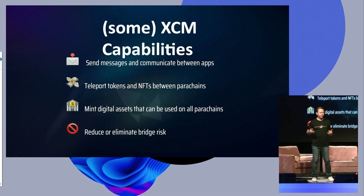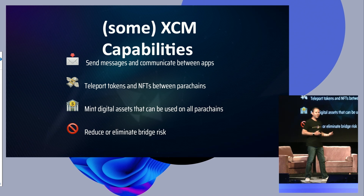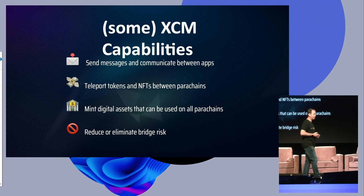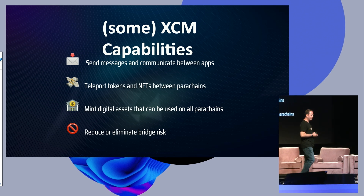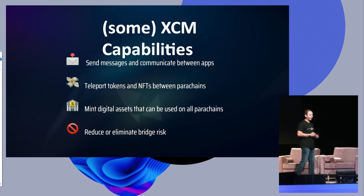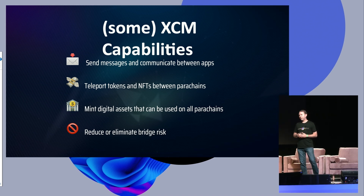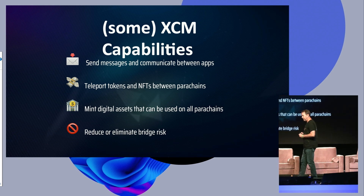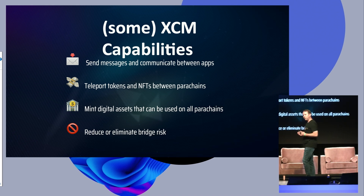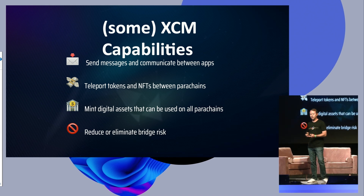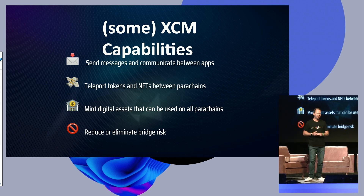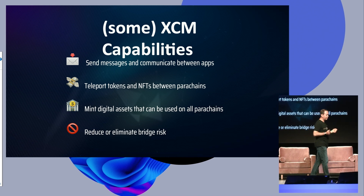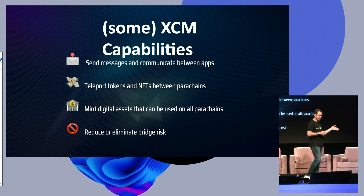We can really reduce or eliminate bridge risk. If you've been following crypto the last few months, you've seen a lot of bridge exploits and hacks. The biggest one was probably Wormhole, and there's been others — the Ronin bridge for Axie Infinity. Harmony One just had $100 million lost on their bridge last week. So we can really reduce or eliminate bridge risk by simply teleporting assets from parachain to parachain.